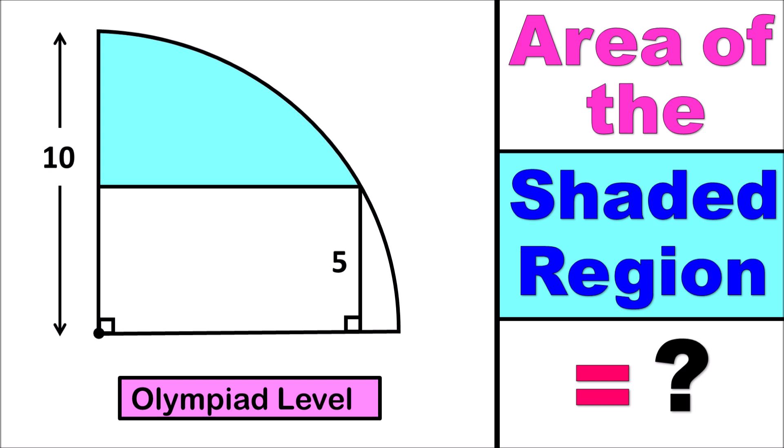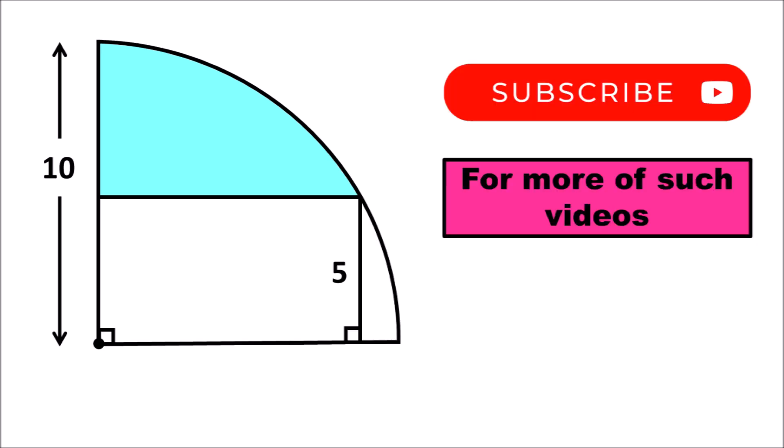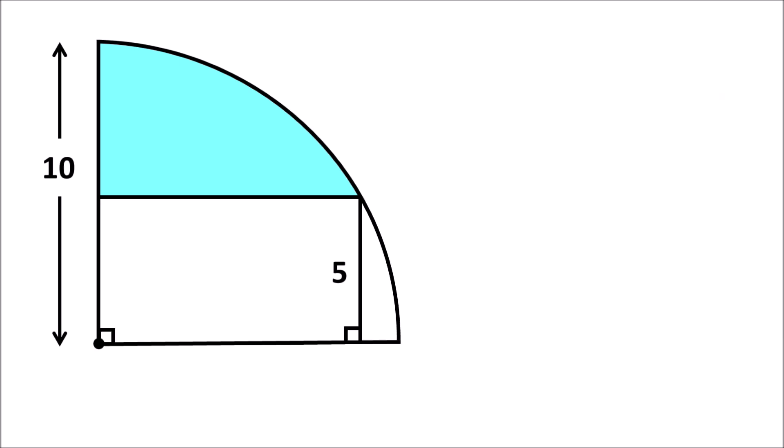Therefore, this shape drawn within the sector is a rectangle. Let us first draw a diagonal to the rectangle. The measurement of this diagonal is 10 units, since this diagonal is also a radius of the sector.